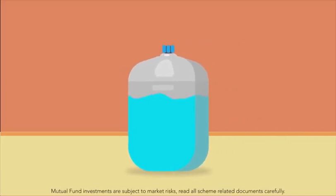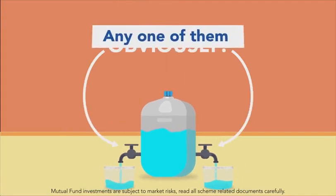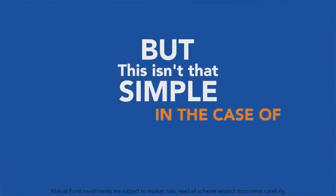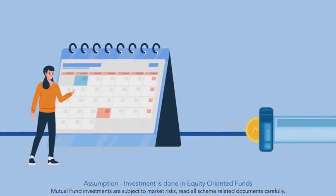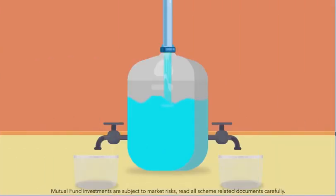Imagine a water tank with two taps — a right tap and a left tap. Either of the two taps can be used to take out the water. Which tap will you prefer? Any one of them, obviously. But this isn't that simple in the case of mutual funds. Your mutual fund investment is like that water tank filled with water — your hard-earned money. Any return or water inflow increases the water level, and any withdrawal decreases it.